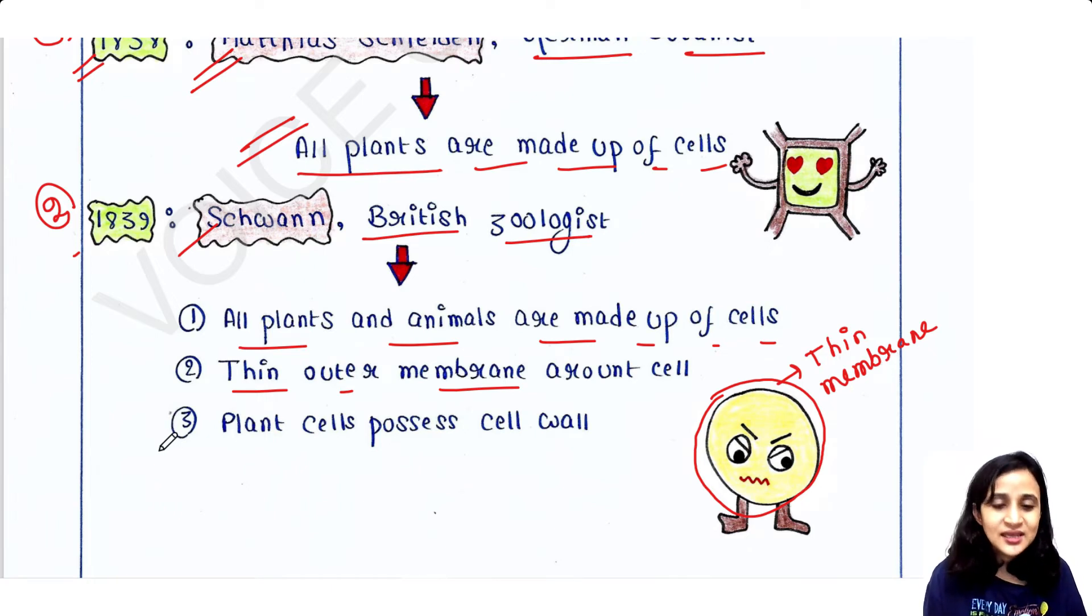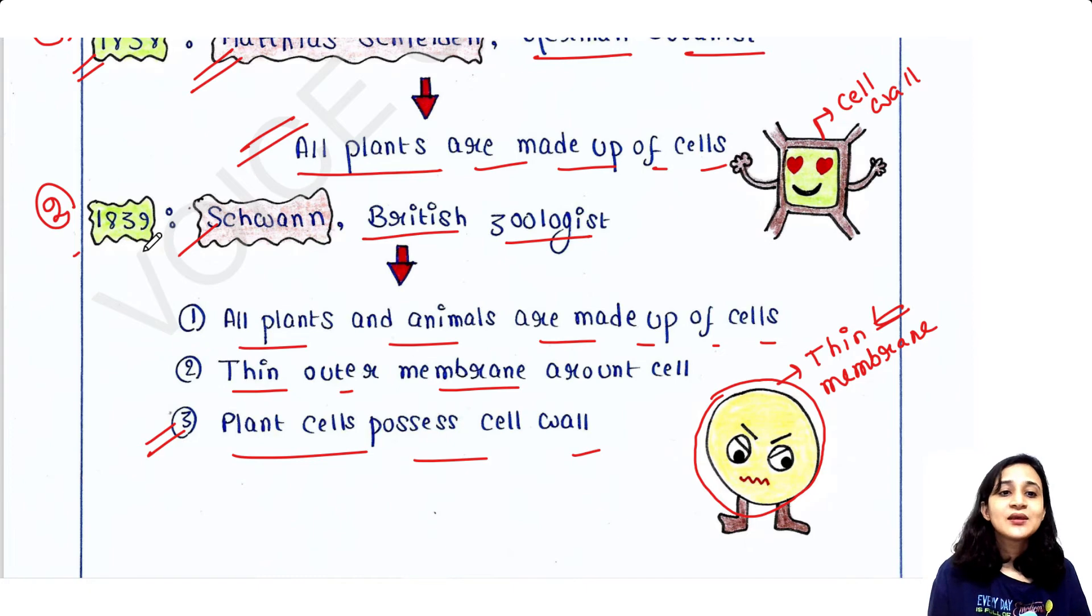And one more thing he concluded: he observed that plant cells possess cell wall. So he found that along with the thin outer membrane, plant cells also contain one more thick membrane outside the cell, that is the cell wall. So these three observations were done by Schwann in 1839.